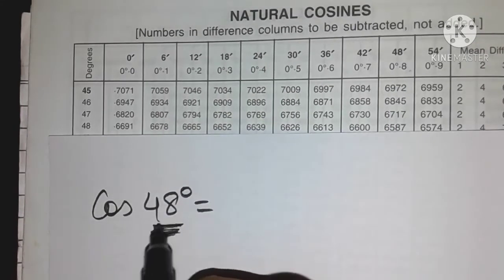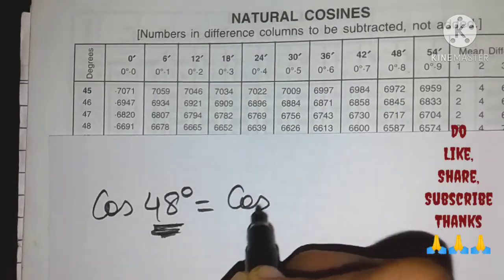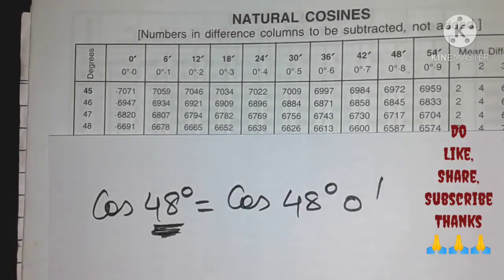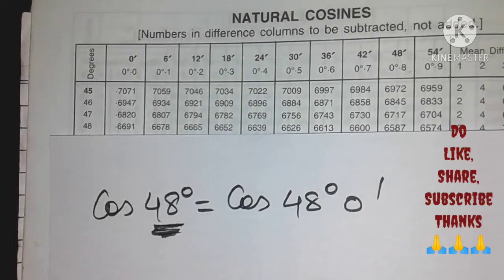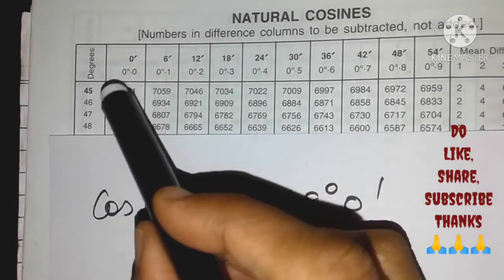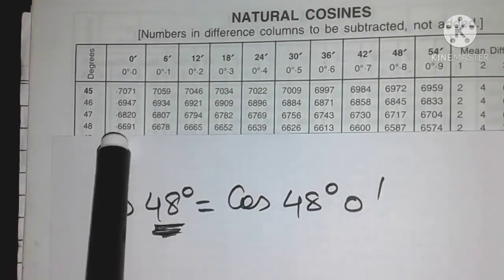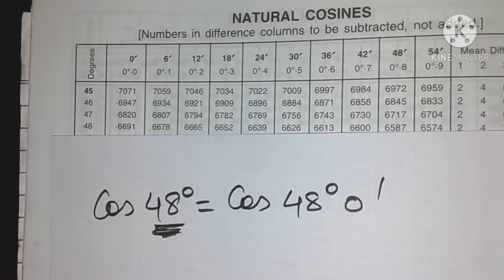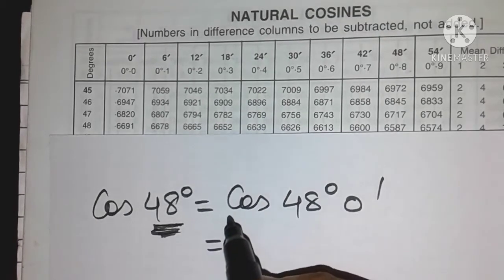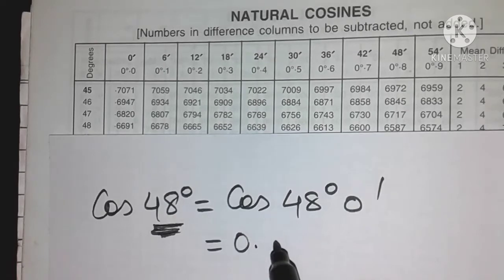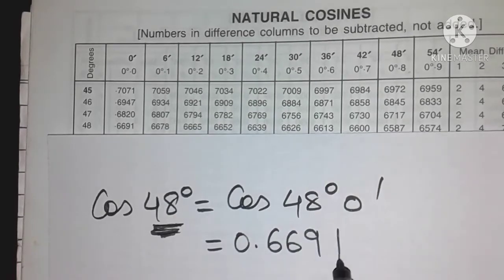Now since there is no minutes attached to 48 degrees, it's actually 48 degrees 0 minutes correct. So we have to look for the 0 minutes column which is right over here and the entry over here is 6691, 0.6691. So cos 48 degrees is nothing but 0.6691.